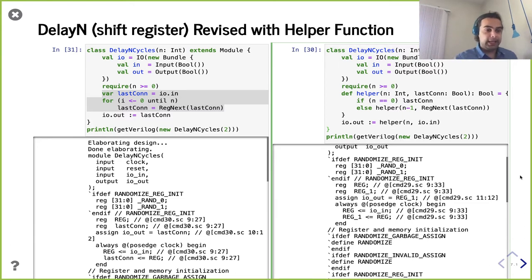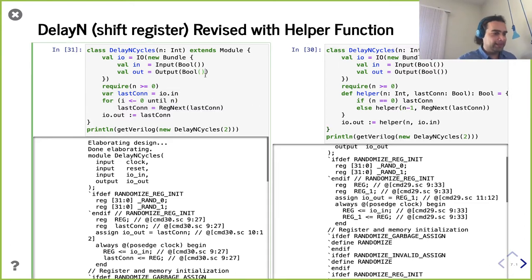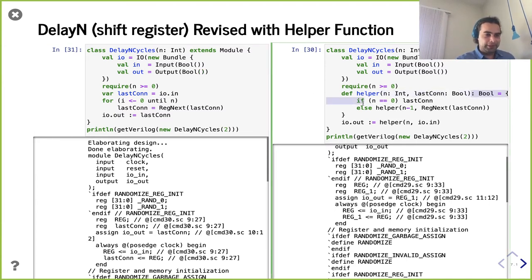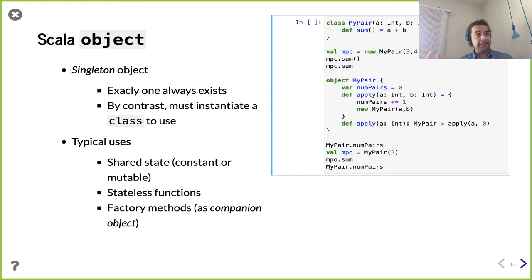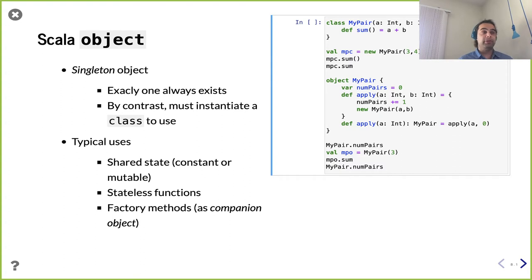Now we're using Scala functions to build up Chisel components, and they're recursive. Let's talk about classes and objects — you may have heard me use those terms interchangeably, and it turns out in Scala they're a little more nuanced. Most of what we've seen so far is a class. A class is kind of like defining a type, and you can have instances of a class. The correct word is 'instances.' In contrast, an object in Scala is something that's a singleton, meaning there's exactly one of them.